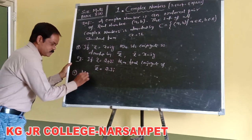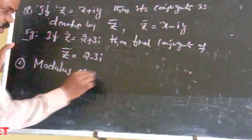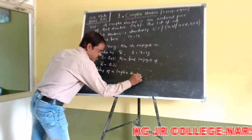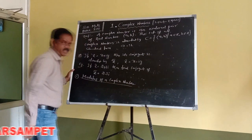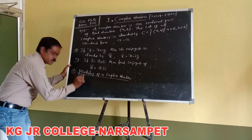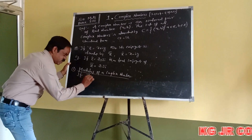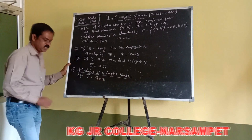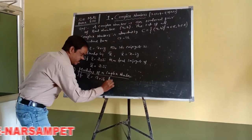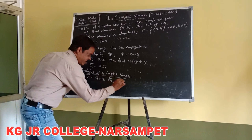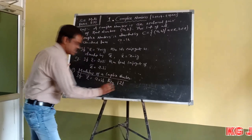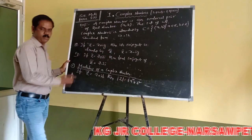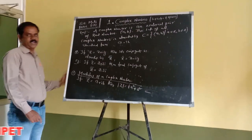Next: modulus of a complex number. Suppose if z = a + ib, then the modulus of z is equal to √(a² + b²). This is called the modulus of a complex number.